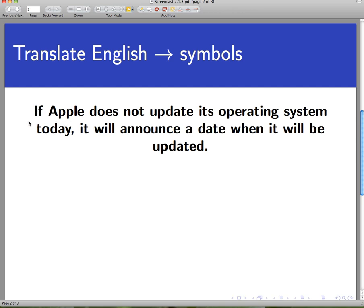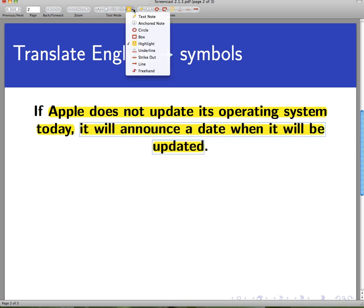The first one you can see here, and note the word if, but the sentence that follows is important: Apple does not update its operating system today. The second sentence that seems to matter is, it will announce a date when it will be updated. So let's annotate the sentence and pick it apart.